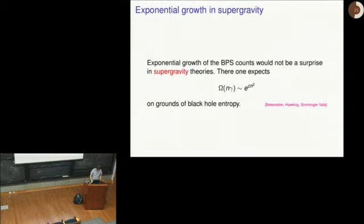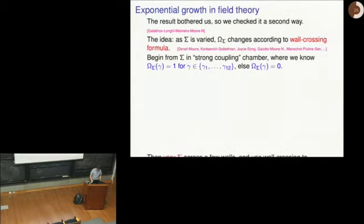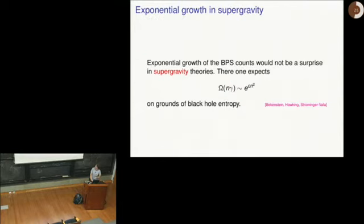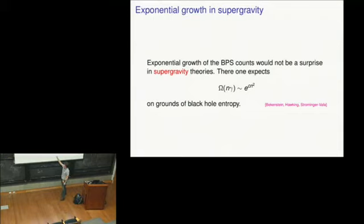The statement is that this very benign-sounding quantum field theory actually has exponential growth in its spectrum of BPS states. For physicists, it's kind of unexpected — naively speaking, it would mean the theory has some kind of Hagedorn-type behavior. In supergravity theories, this would not have been a surprise — you'd expect exponential growth because of black hole entropy — but in field theory, it's quite another story.